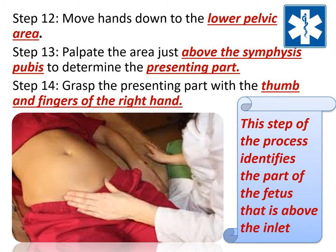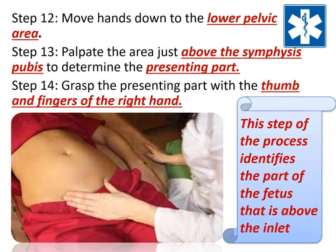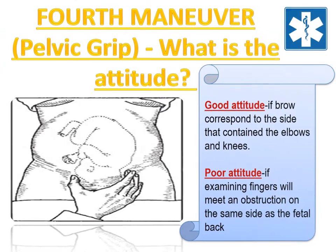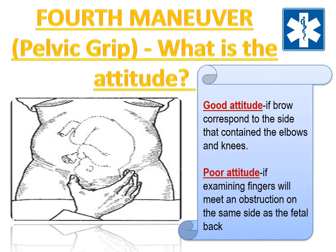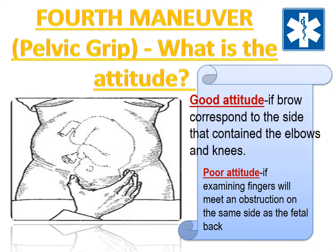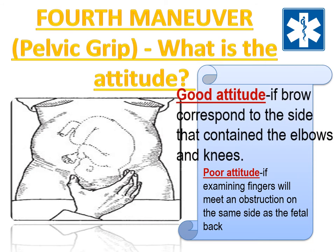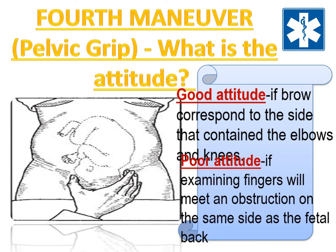For the next step: face the client's feet. Place hands on the abdomen and point fingers toward the mother's feet. Next step: gently move the fingers of both hands towards the pubis by sliding the hands over the sides of the patient's uterus. The side where there is the greatest resistance to the descending fingers is the location of the brow.